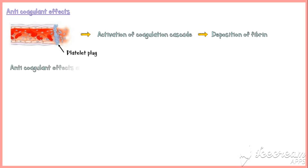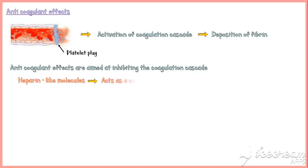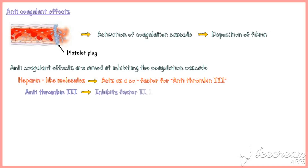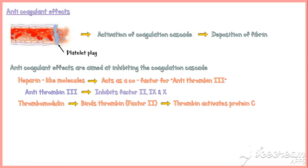Anticoagulant effects are aimed at inhibiting the coagulation cascade. Endothelial cells secrete heparin-like molecules, which act as co-factors for a molecule called antithrombin 3. Antithrombin 3 in turn inhibits factors 2, 9, and 10, and inhibits coagulation. Endothelial cells also secrete thrombomodulin, which binds to thrombin (factor 2). Thrombin in turn activates protein C, and activated protein C then inhibits factors 5 and 8 to inhibit coagulation.